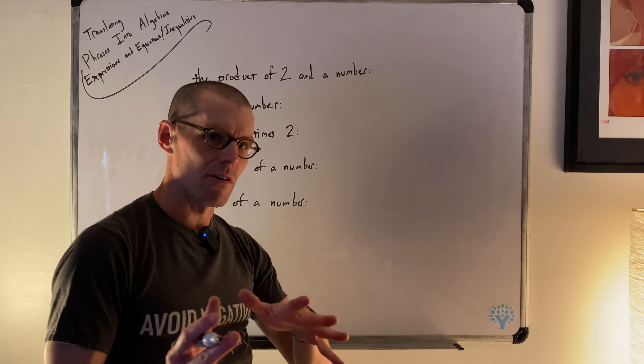Two-thirds of a number subtracted from 10 is 10 minus two-thirds of a number. This is one of the most counterintuitive things about subtraction language. So much depends on the language. 10 minus two-thirds of a number equals 2: 10 − (2/3)x = 2.